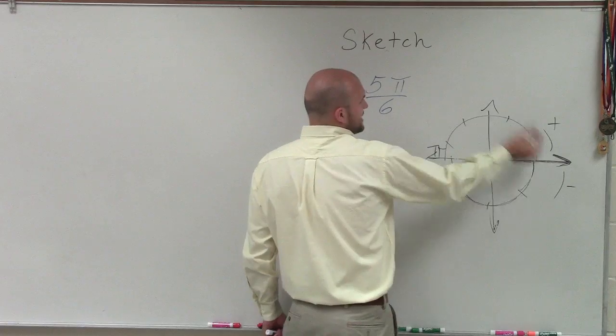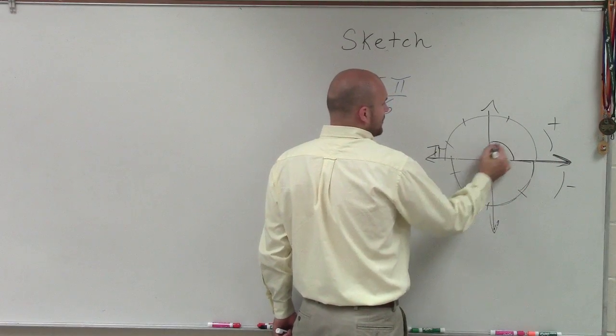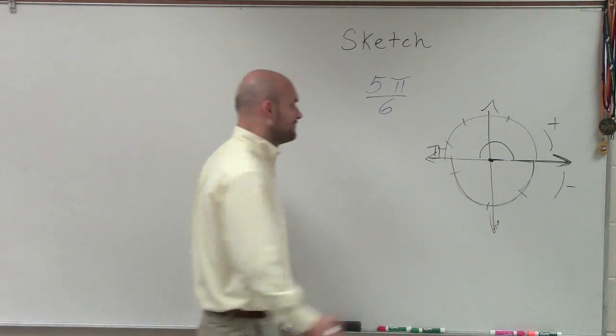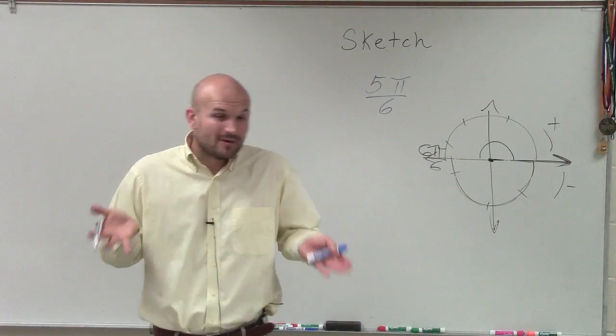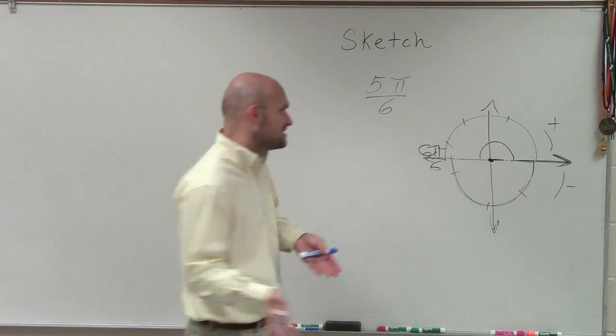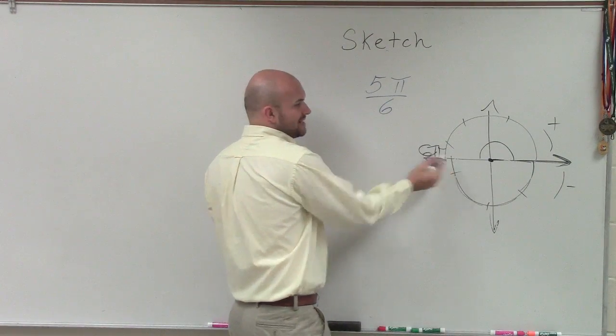So wrapping this, this is positive, so I'm going to rotate that direction. So wrapping it all the way around the circle would be pi. But if you're going to look at that as a whole, we could say that's 6 pi over 6. But we don't have a whole. We have 5 pi over 6. So I need to take out 1 sixth away from this.